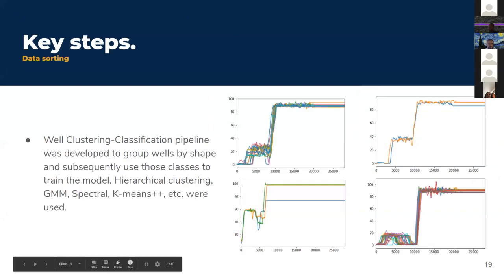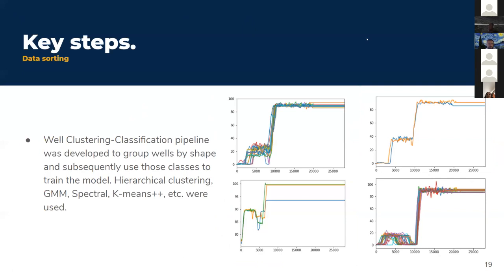The next step was to cluster wells to prepare appropriate optimizations for each cluster of similar wells. Several unsupervised learning algorithms were tested for numerical data clustering, including hierarchical clustering, GMM, spectral clustering, and k-means++. They also tried building a visual cluster using transfer learning — a deep net image classifier for well shapes — but for this specific project it turned out to be less effective than basic clustering algorithms.